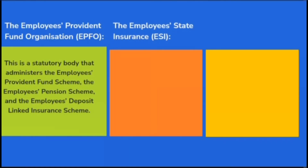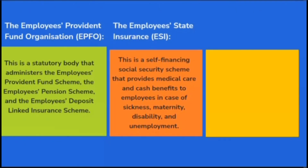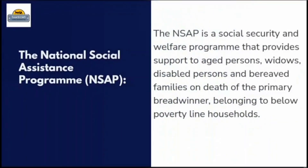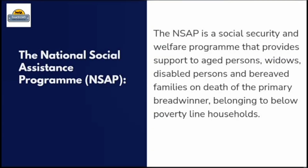The Employees' State Insurance (ESI) is a self-financing social security scheme that provides medical care and cash benefits to employees in case of sickness, maternity, disability, and unemployment, covering employees in the organized sector who earn less than a certain threshold. The National Pension System (NPS) is a voluntary, defined contribution pension scheme open to all citizens of India, including those in the unorganized sector, offering multiple investment options and tax benefits. The National Social Assistance Program (NSAP) provides support to aged persons, widows, disabled persons, and bereaved families on death of the primary breadwinner, belonging to below-poverty-line households.